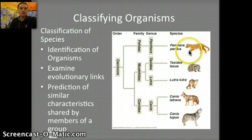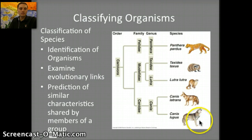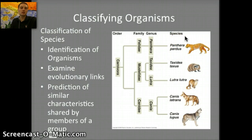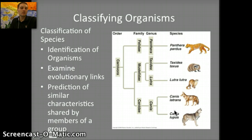For example, here's a tree we can look at. We have a number of different species, Canis lupus being a wolf — a modern wolf species. Because these two species are grouped closely to one another, we would expect them to have very similar characteristics. All of these organisms here, we would expect to have similar characteristics in comparison to a different organism, such as a frog or a bird, because they're more closely grouped together.